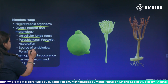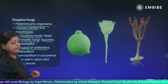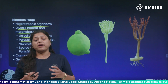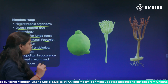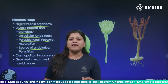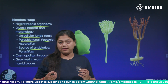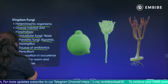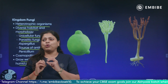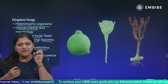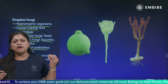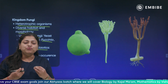Another example is Aspergillus, which is also a source of antibiotics. When bacterial diseases occur, this fungi is used for making medicine — it is a source of antibiotics. Fungi are cosmopolitan in nature, found everywhere. They grow well in warm and humid places — wherever there is some humidity and warmth, you will easily find fungus growing.